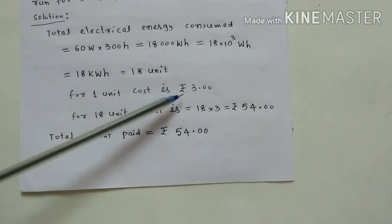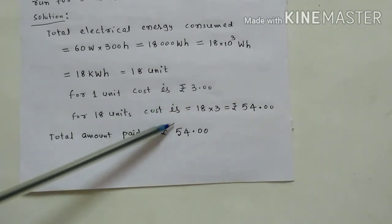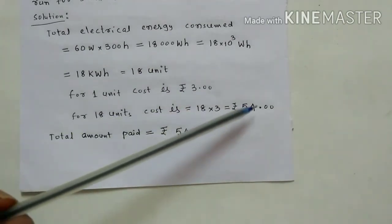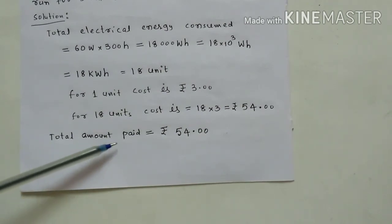So one unit price is given. For one unit cost is 3 rupees. For 18 units cost is 18 into 3, 54 rupees. Total amount paid is 54 rupees. You got it?